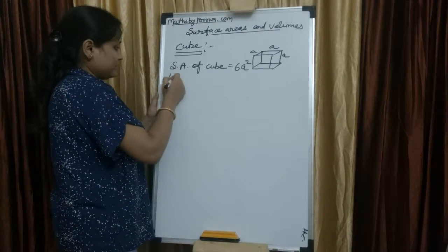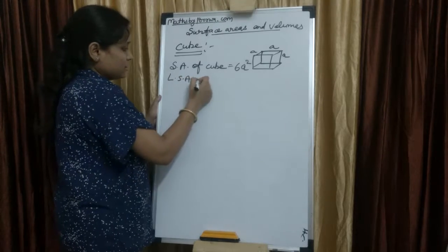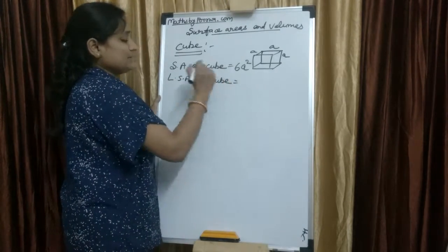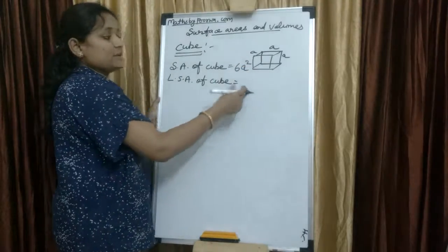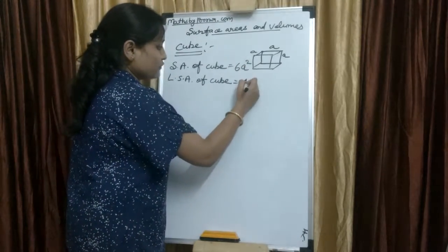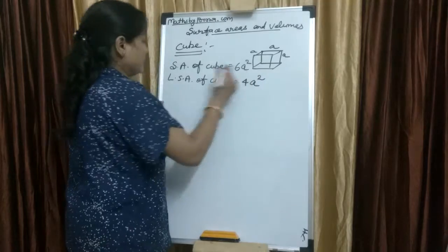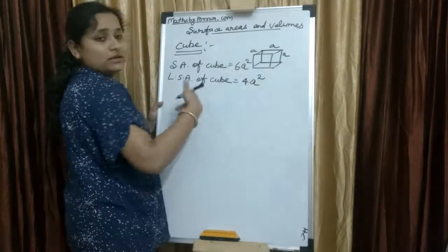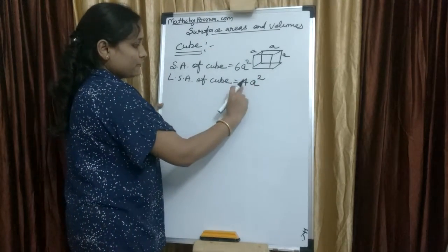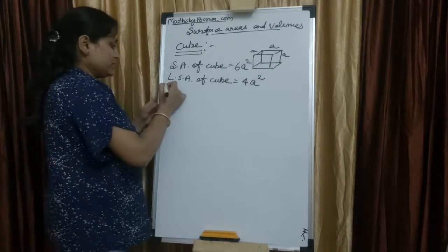The lateral surface area of a cube equals 4a², because we remove the top and bottom faces (each contributing a²), leaving 4 faces. Now we will take an example of a cube.